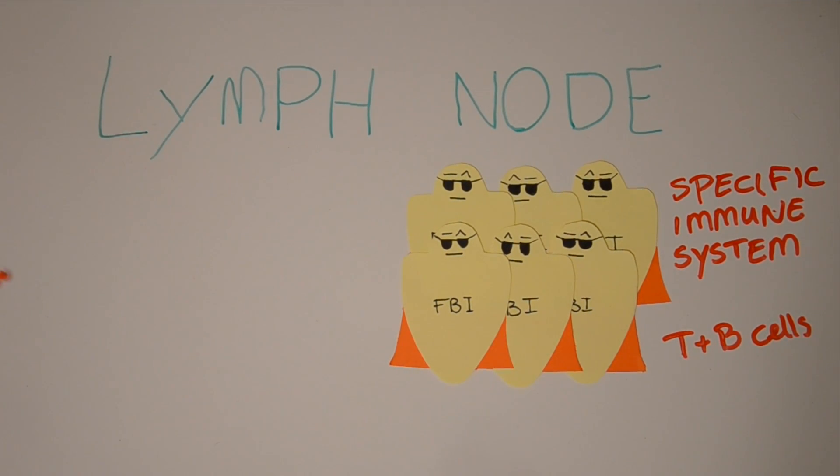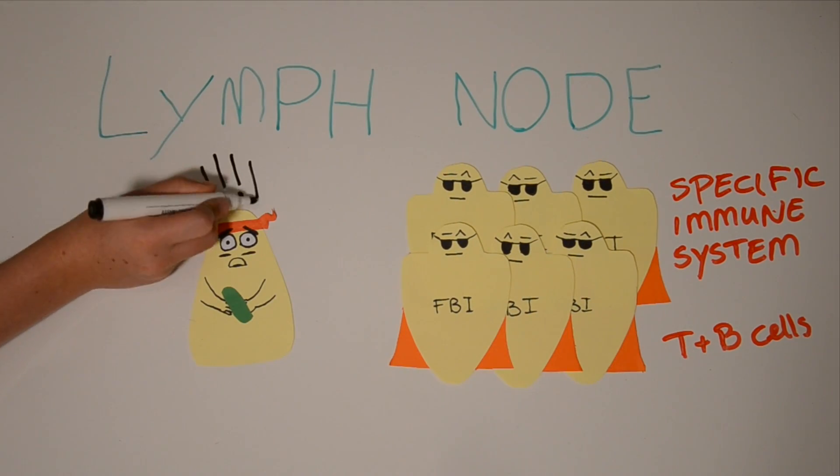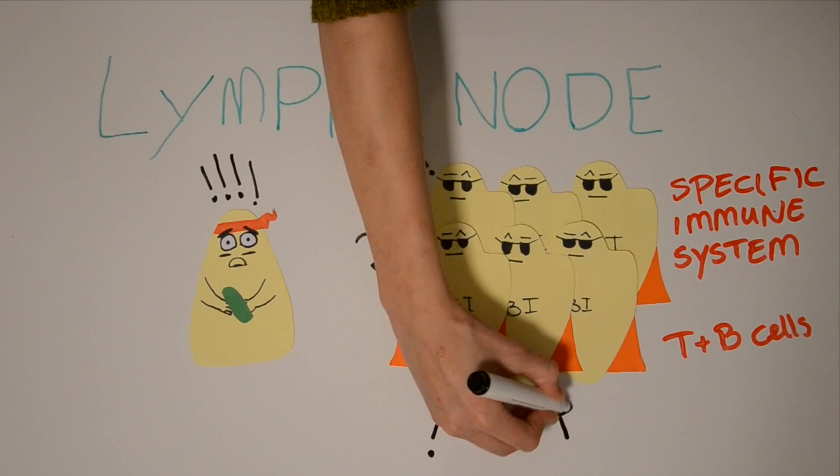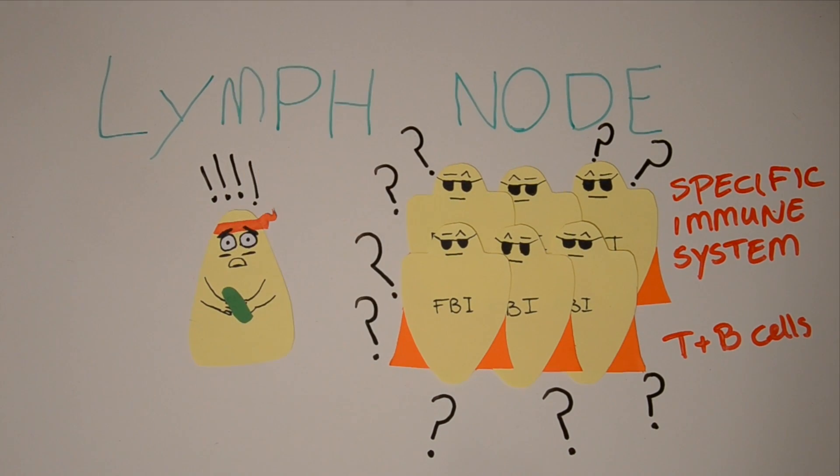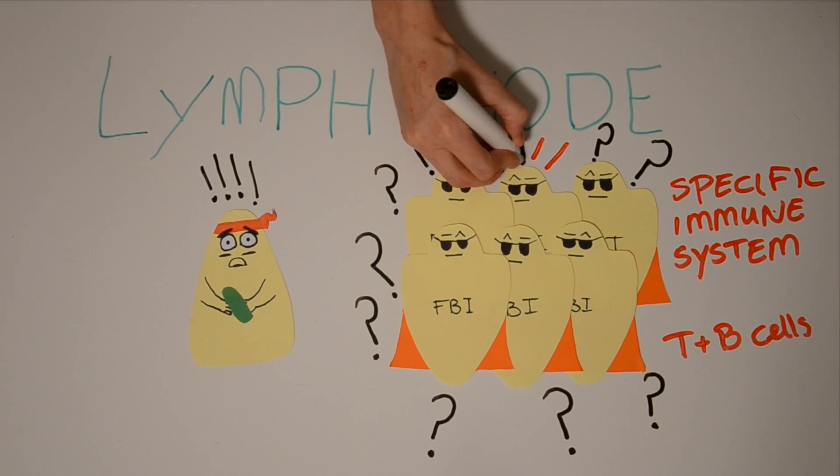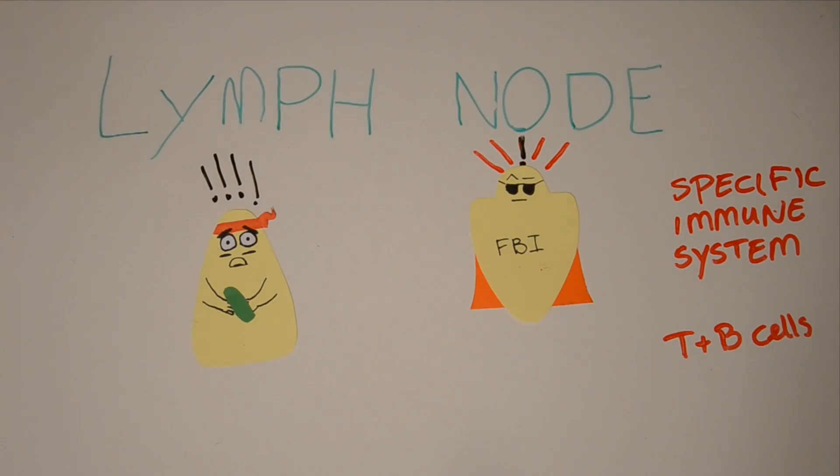These cells are called T cells and B cells. However, not all T and B cells can attack the pathogen. The cells have to have a specific affinity for the antigen. As you can imagine, it can be quite hard to find the right cell for the job.